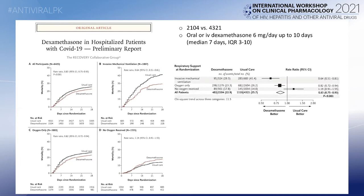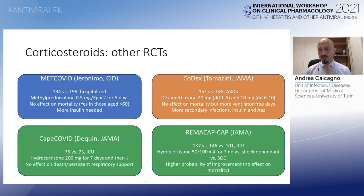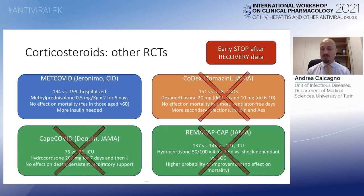The forest plot shows the best effect of dexamethasone in patients on invasive mechanical ventilation, an effect in those receiving supplemental oxygen, but no effect in those not receiving supplementary oxygen. This helped us understand why the effect on mortality was less pronounced compared to the effect on invasive mechanical ventilation incidence. After this data, several other trials were stopped early due to futility, so we will not have data on most other corticosteroids or dosages.